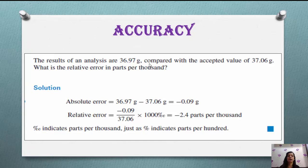We will see one example. The result of analysis is 36.97 grams compared with accepted value 37.06 grams. What is the relative error in parts per thousand? The observed observation is given to you and the acceptable value, or true value, is given. The difference between them - we have recorded the negative sign and put error with regard to sign. Relative error is calculated by taking absolute error divided by true value multiplied by thousand.